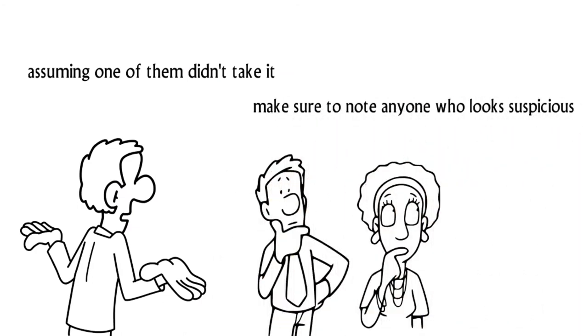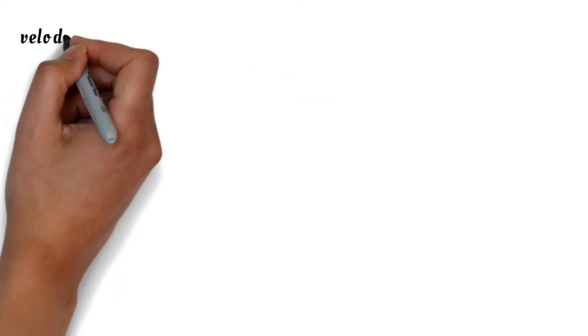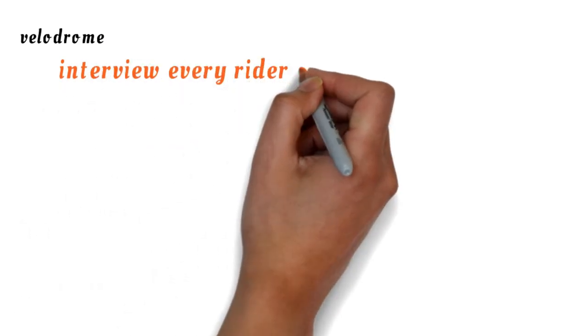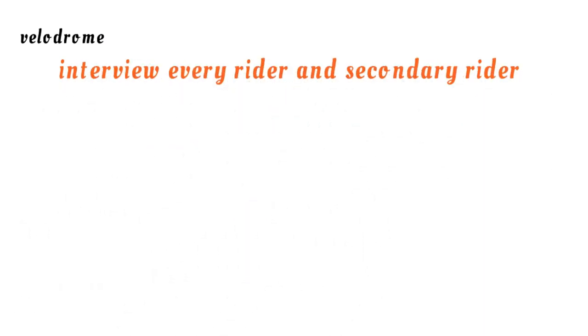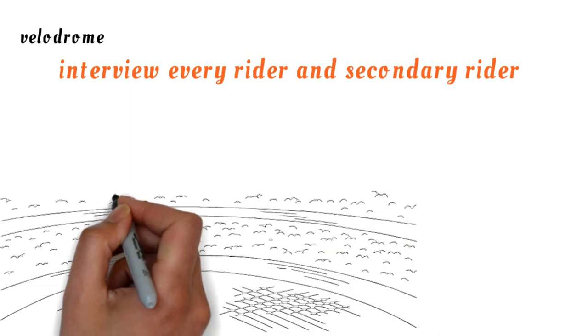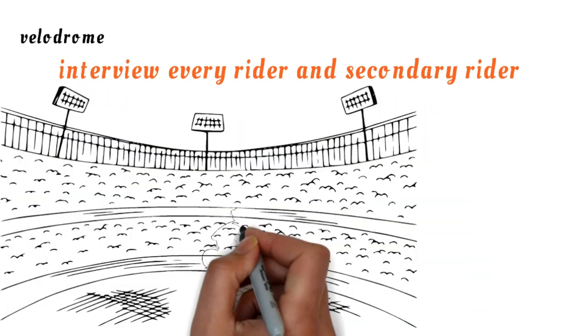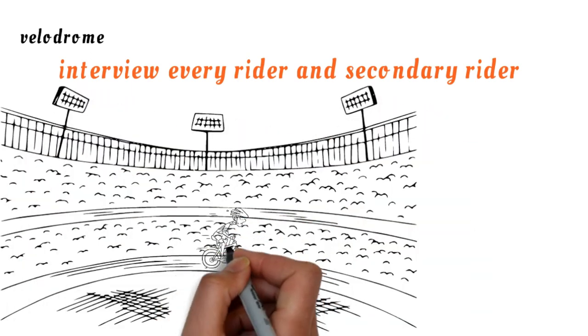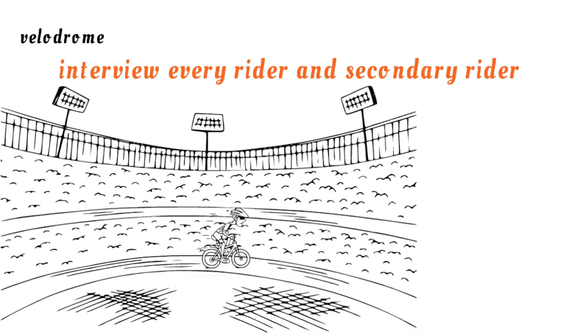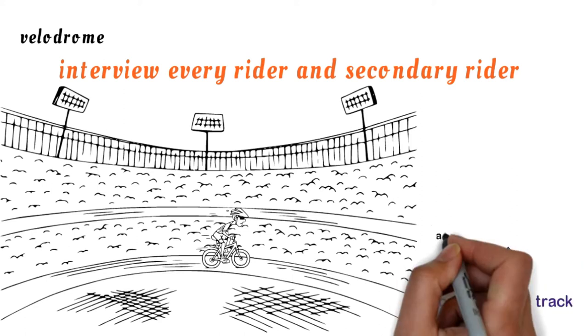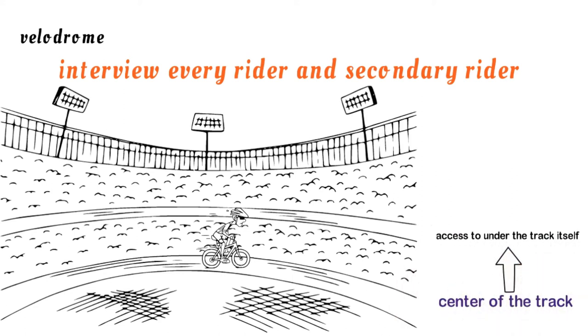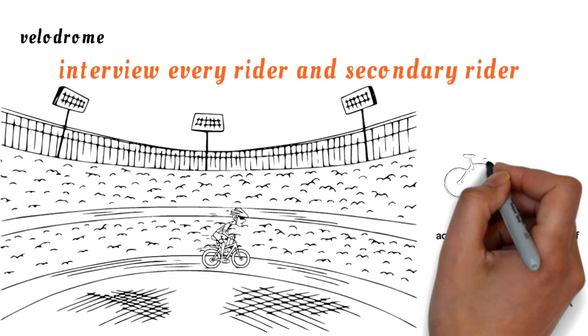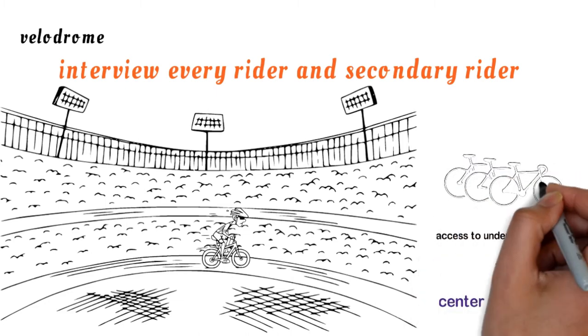When you get to the velodrome, interview every rider and secondary rider you see. Maybe they saw something suspicious while cycling practice laps. Thankfully, there isn't much space on the track to lose something like a torch, but something could easily be hidden or lost in the center of the track. Most track centers have access to under the track itself, so send someone under there to look at the bike bays and cyclist warm-up area.